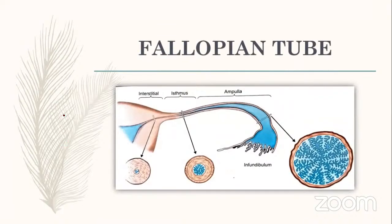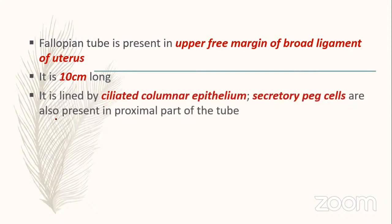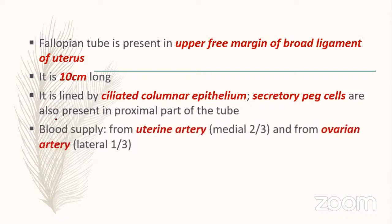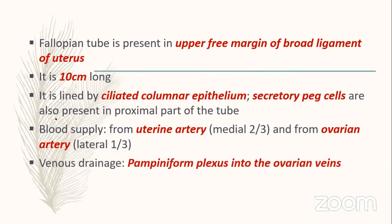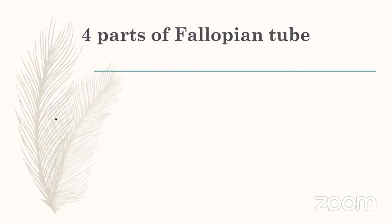The fallopian tube lies in the upper free margin of the broad ligament. It is 10 cm in length and lined by ciliated columnar epithelium; secretory peg cells are also present. Blood supply: the medial two-thirds is supplied by the uterine artery (branch of the internal iliac artery) and the lateral one-third by the ovarian artery. Venous drainage is via the pampiniform plexus into the ovarian veins. Lymphatic drainage goes to the para-aortic nodes.